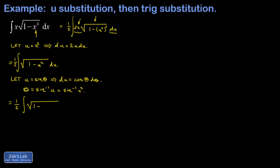I make my trig substitution and get the square root of 1 minus sine-squared θ, times du which becomes cosine θ dθ. Then I apply the Pythagorean trig identity — a reminder: cosine-squared plus sine-squared equals 1, so cosine-squared equals 1 minus sine-squared. The inside of the square root simplifies to cosine-squared, and when I take the square root I get another copy of cosine.